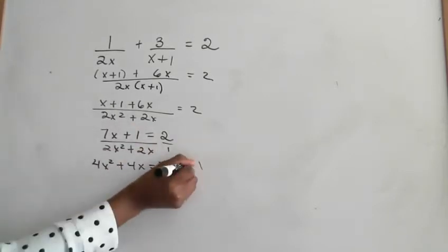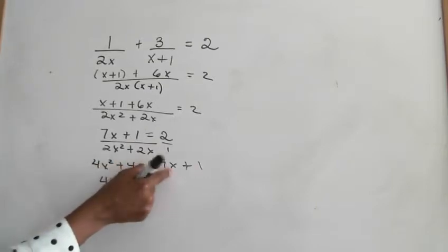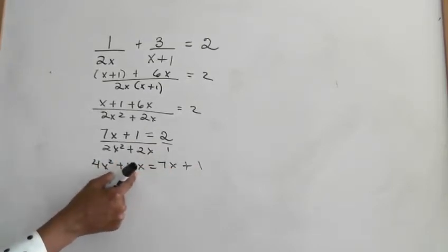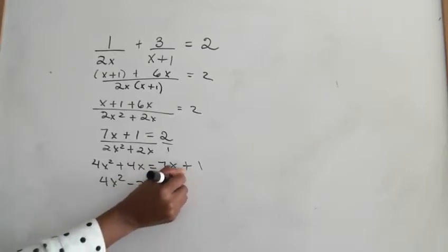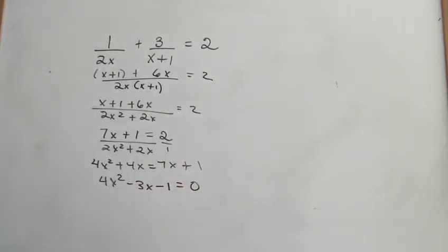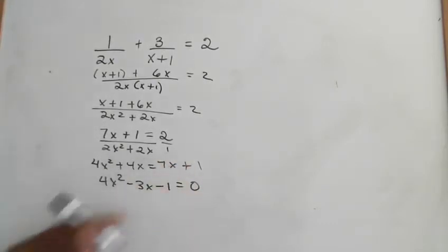Okay, cross multiply. Now, keep this here, you get 4x squared. Bring the 7 over here with subtraction, minus 3x minus 1 is equal to 0. Yeah, because you're bringing this over here, 4 minus 7 is a negative 3, minus 1, 0.